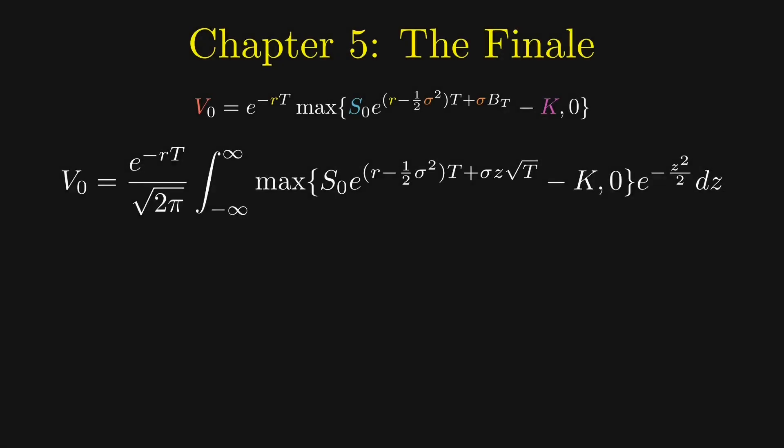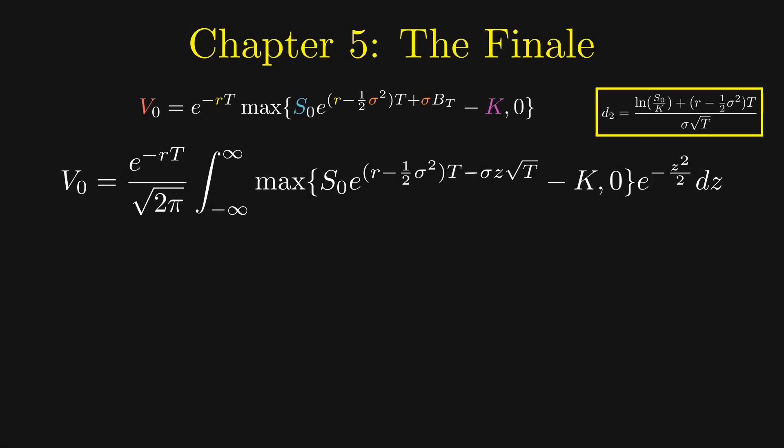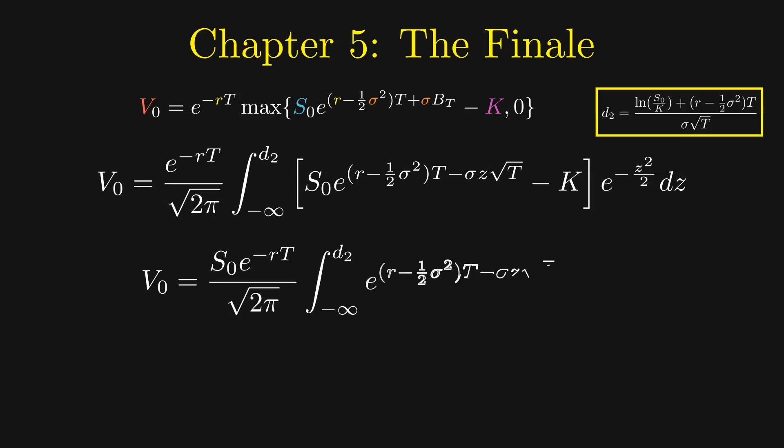Then we can split this integral into two halves. The second half is simply K times e to the power negative rt, multiplied by N of d_2, where N is the cumulative distribution function of the standard normal distribution.